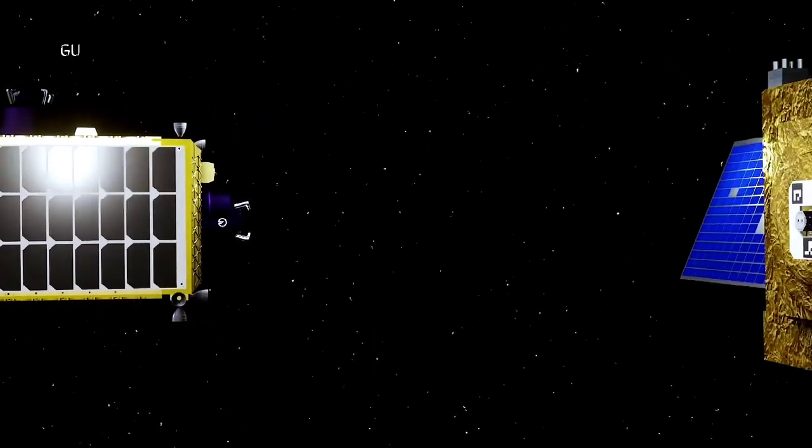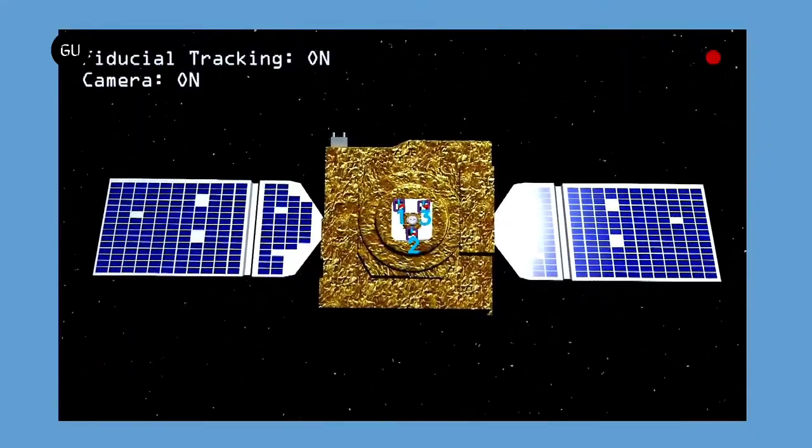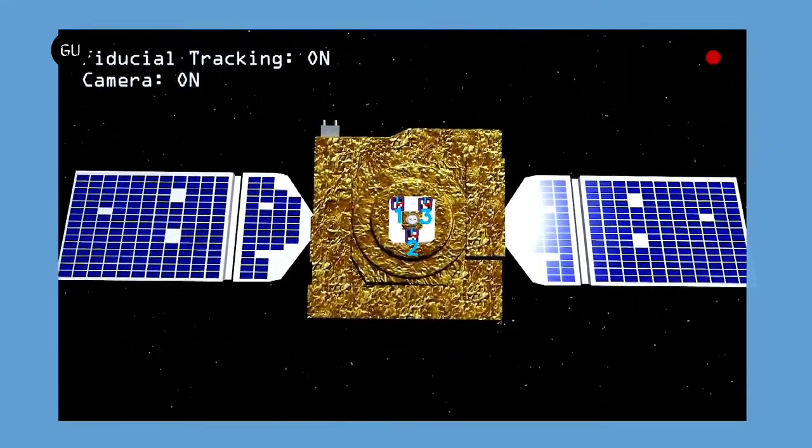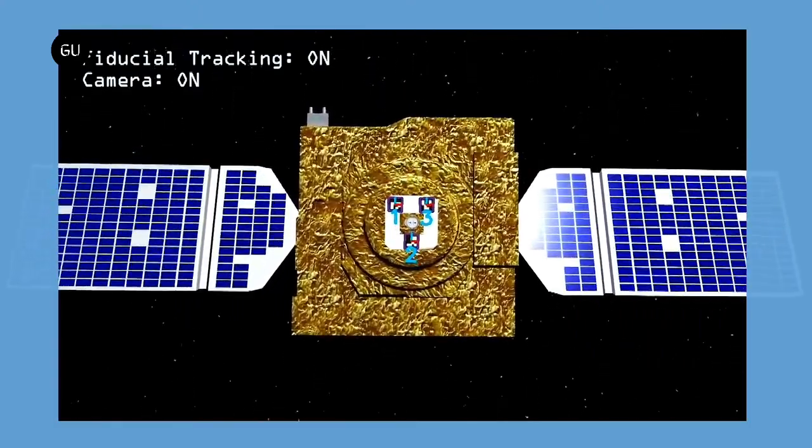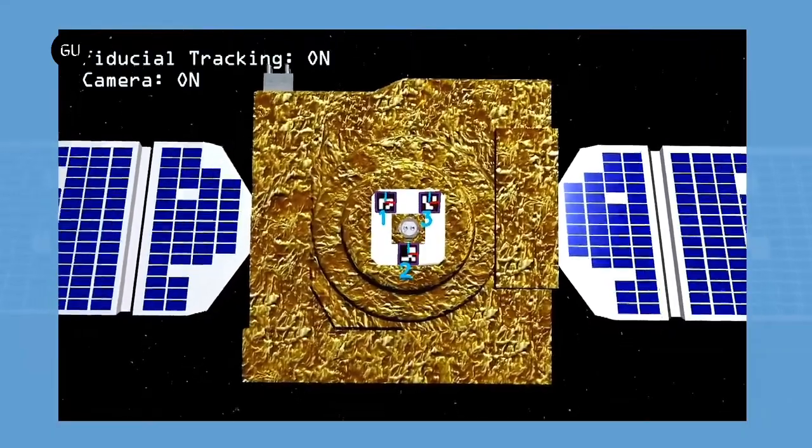One of the most difficult issues in space exploration is extending the lifespan of satellites. Even if the satellite system is operational, it can run out of fuel and become defunct. Orbit Fab, this startup, is working on an innovative solution to make satellites reusable.